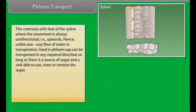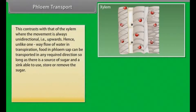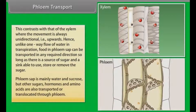This contrasts with that of the xylem, where the movement is always unidirectional, which means upwards. Unlike the one-way flow of water in transpiration, food and phloem sap can be transported in any required direction, so long as there is a source of sugar and a sink able to use, store, or remove the sugar. Phloem sap is mainly water and sucrose, but other sugars, hormones, and amino acids are also transported or translocated through phloem.